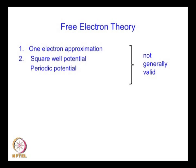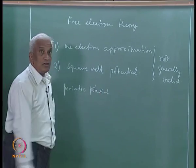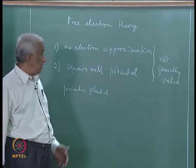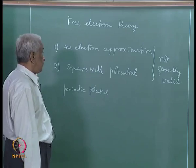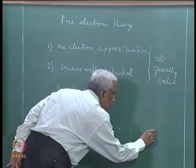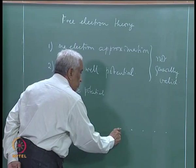In order to make further progress, it is necessary to go beyond these approximations and consider a more realistic situation in which we consider the periodic potential experienced by an electron due to all the ion cores in the crystal lattice. There are ion cores regularly arranged in a crystal lattice in all three dimensions; here we are showing the one-dimensional situation.